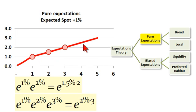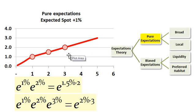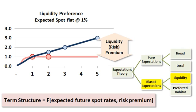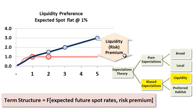So again, under pure expectations, this curve only contains information about the prediction of future short rates or spot rates. That's not going to be realistic, because under an improved theory — shifting from pure expectations to biased expectations — we keep the idea that the yield curve contains information about future expected spot rates, but we add the more realistic assumption that investors are going to demand a risk premium. We call this a liquidity premium, or more generally and probably more accurately, a liquidity risk premium.